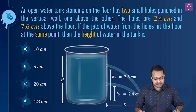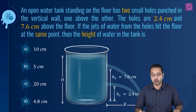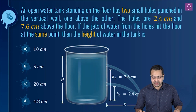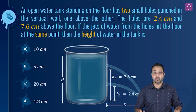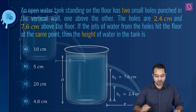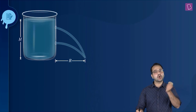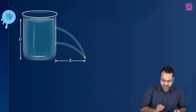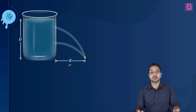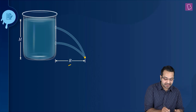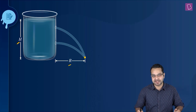The question is: an open water tank standing on the floor has two small holes punched in the vertical wall, one above the other. The holes are 2.4 centimeter and 7.6 centimeter above the floor. If the jets of water from the holes hit the floor at the same point, then what is the height of the water in the tank? Two holes are punched and the water jets hit the floor at the same point, which means the horizontal range for both of them is going to be the same.